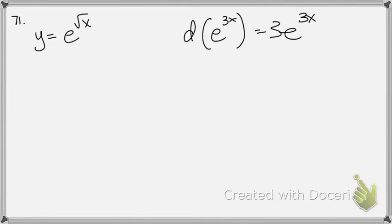So this is the same thing. The derivative is going to be e to the u times the derivative of u.